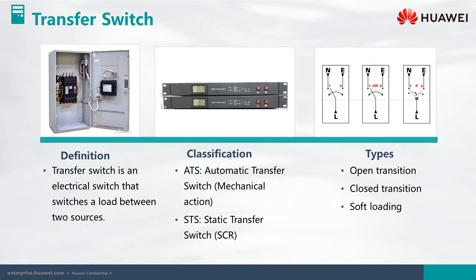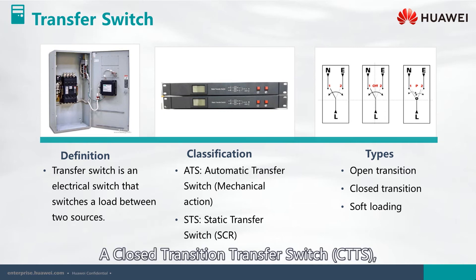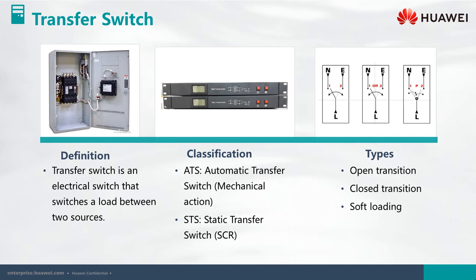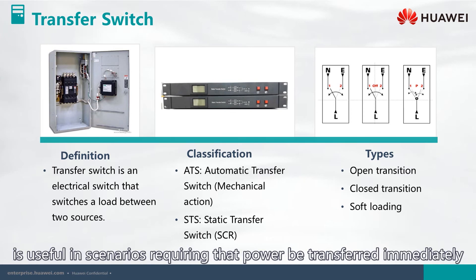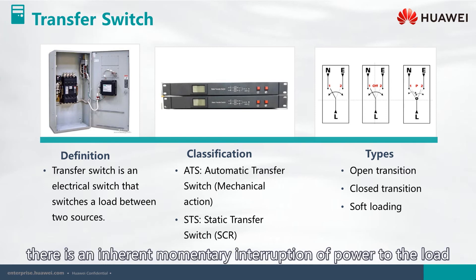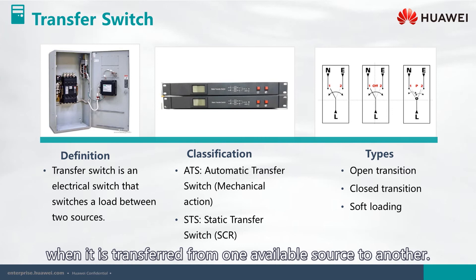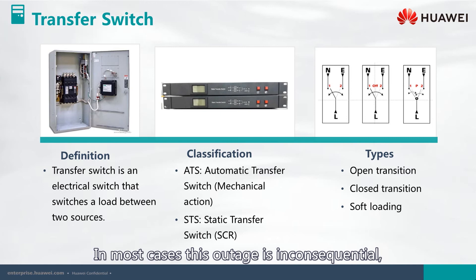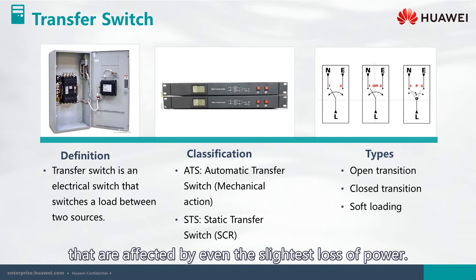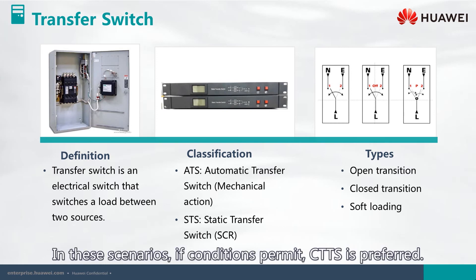A closed transition transfer switch, CTTS, also known as a make-before-break transfer, is useful in scenarios requiring that power be transferred immediately following a power interruption. In a typical emergency system, there is an inherent momentary interruption of power to the load when transferred from one source to another. In most cases this outage is inconsequential, particularly if it is less than one-sixth of a second. However, some loads are affected by even the slightest loss of power, and in these scenarios, if conditions permit, CTTS is preferred.